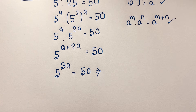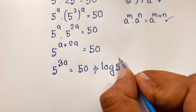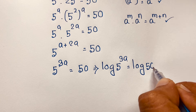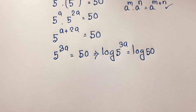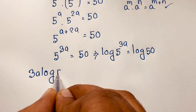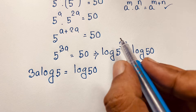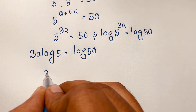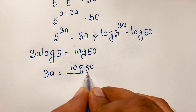Now at this moment I use logarithm on both sides. So log of 5 to the power 3a is equal to log 50. According to the exponential formula, the exponent moves in front, so it will be 3a times log 5 is equal to log 50. Now if I divide both sides by log 5, we find that 3a is equal to log 50 over log 5.